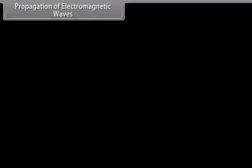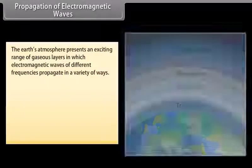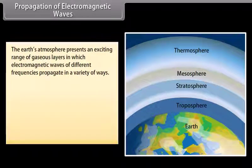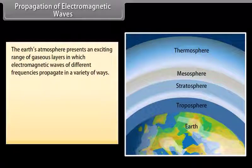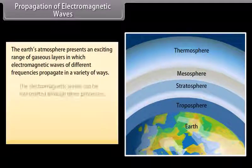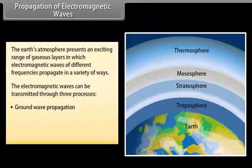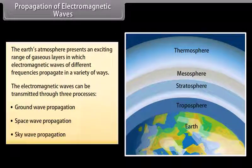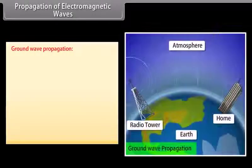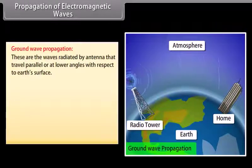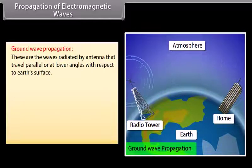Propagation of electromagnetic waves. The Earth's atmosphere presents an exciting range of gaseous layers in which electromagnetic waves of different frequencies propagate in a variety of ways. The electromagnetic waves can be transmitted through three processes: ground wave propagation, space wave propagation, and sky wave propagation.